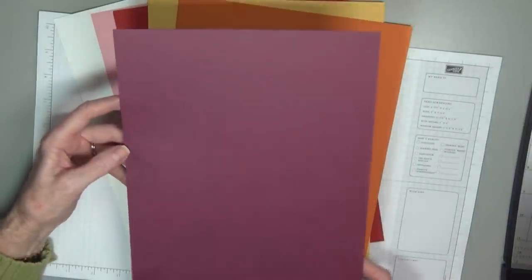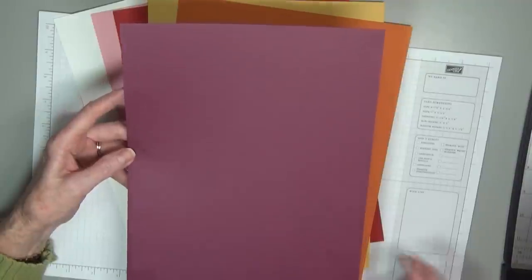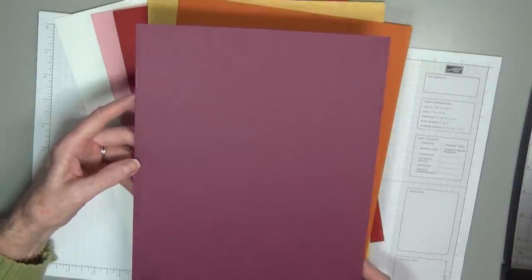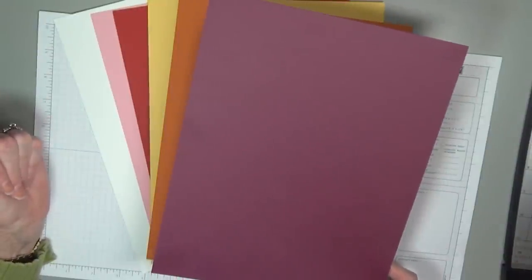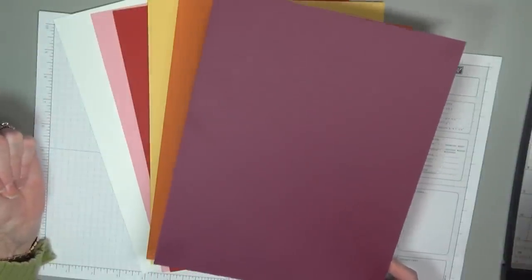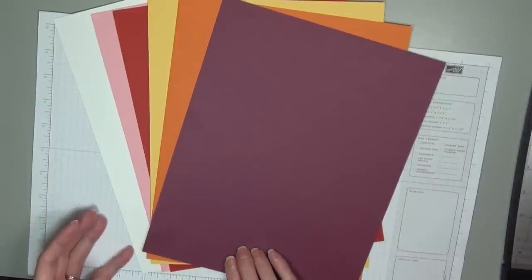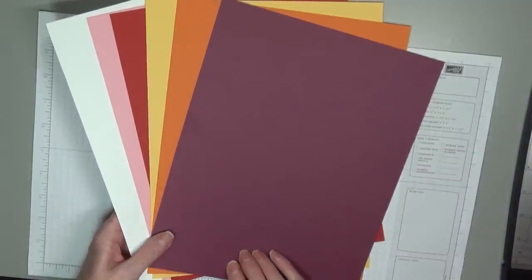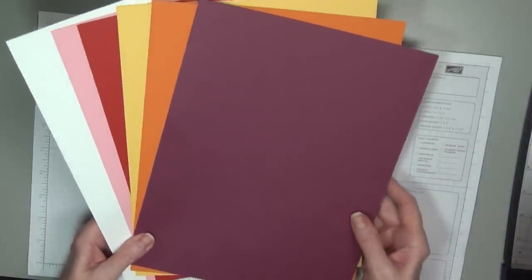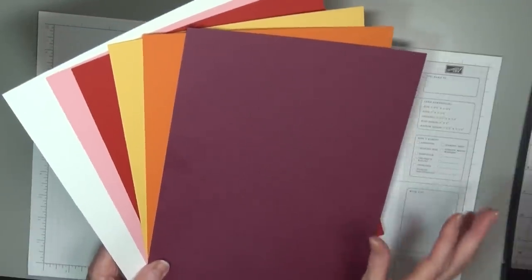Stampin' Up! cardstock also is dyed all the way through. It doesn't have a white core. It comes in four different families, plus we have two end sets. Stampin' Up! has thought about that beginner stamper getting started. So on page 174 of our catalog, our large catalog...